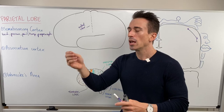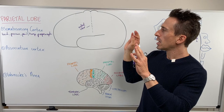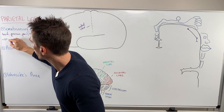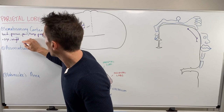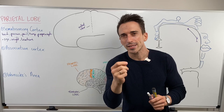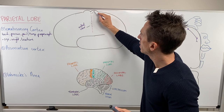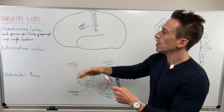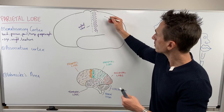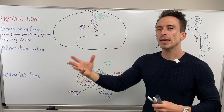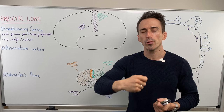The somatosensory cortex allows us to understand that we are feeling something — touch, pressure, pain, temperature, proprioception — and also allows us to make a judgment of what we're feeling, such as the size, weight, and texture of an object. But it still doesn't actually tell us what the object is. This is where we need the association cortex, which is sitting around about here.